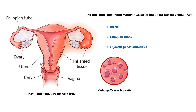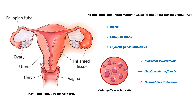Chlamydia trachomatis is the most common causative organism of pelvic inflammatory disease. Others include Neisseria gonorrhoeae, Gardnerella vaginosis, and Haemophilus influenzae.